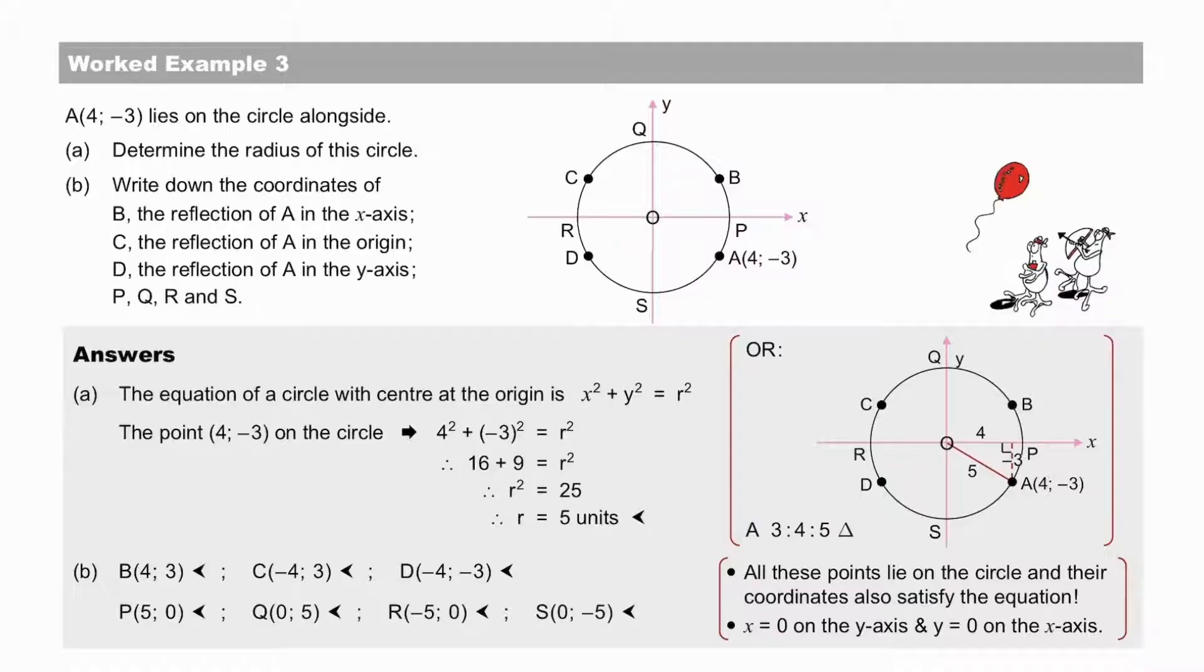P and R are on the x-axis, and therefore must have y equal to 0, and Q and S are on the y-axis, and so must have x equal to 0.